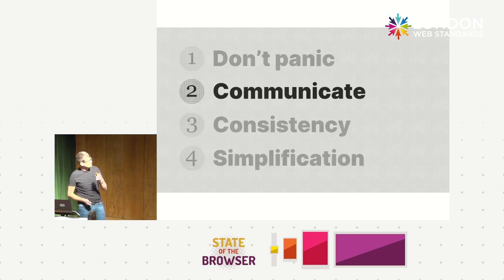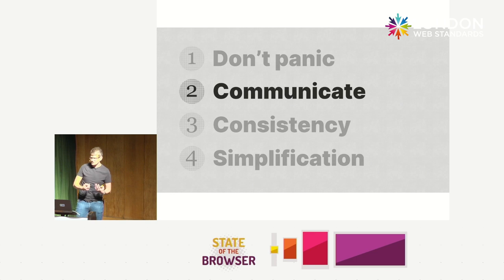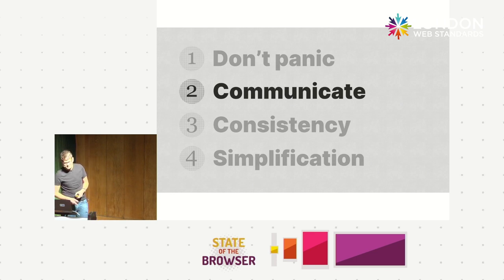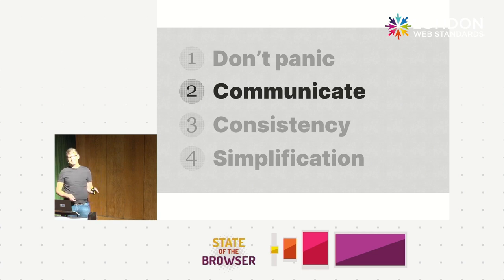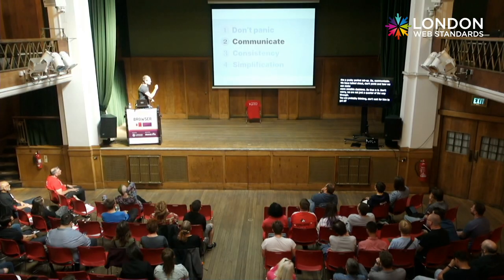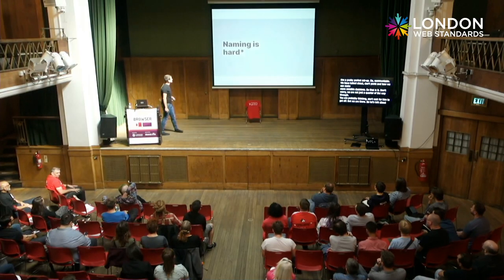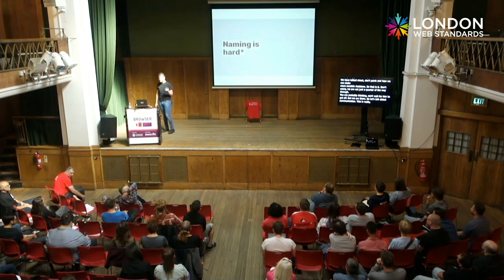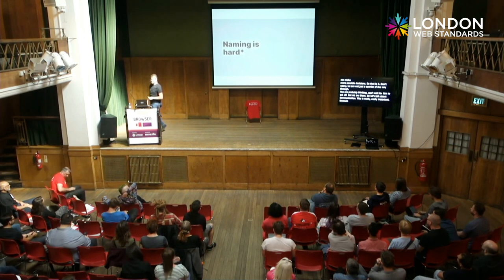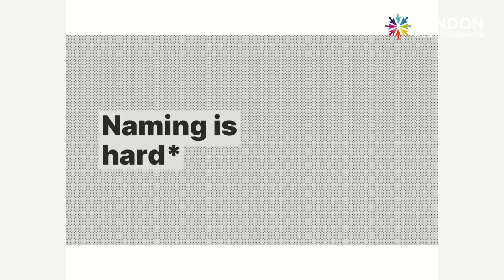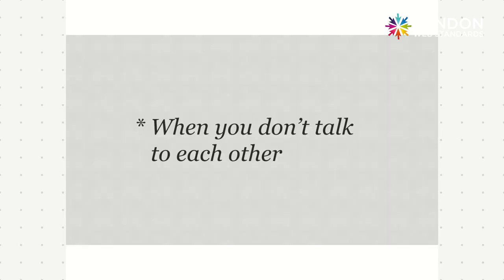We've talked about don't panic and how we can mitigate panic and make more sensible decisions. So let's talk about communication, because I think this is really, really important. Naming is hard. And naming is only hard when you don't talk to each other. Let's use the context of generated CSS class names.